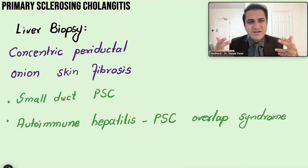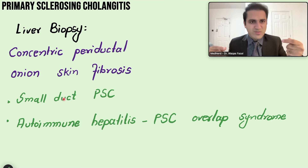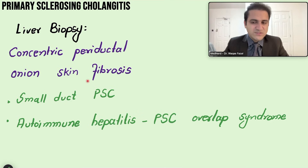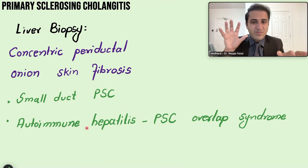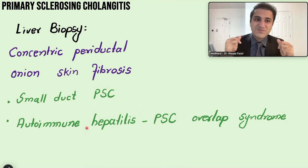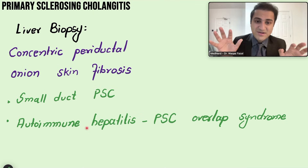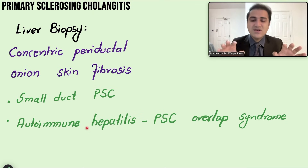In that case, liver biopsy can show concentric periductal 'onion skin' fibrosis — a pattern of repeated cycles of fibrosis creating layers upon layers around the ducts. Liver biopsy is also indicated if you suspect an overlap syndrome of autoimmune hepatitis and primary sclerosing cholangitis.